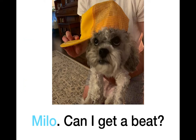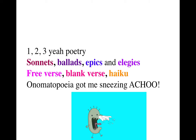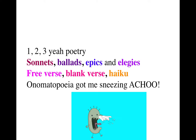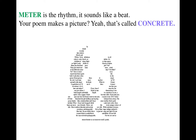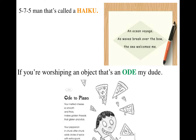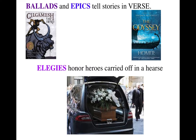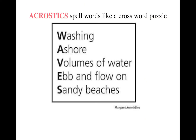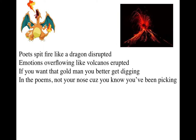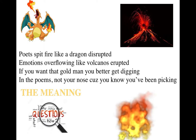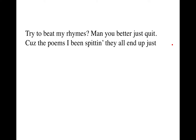Hey Milo, can I get a beat? I said one, two, three, yeah — poetry! We're talking sonnets, ballads, ethics, and elegies. We're talking free verse, blank verse, haiku. Onomatopoeia got me sneezing. Some poems you see, they just got to rhyme. And some are just free, man — it ain't no crime. Limericks and sonnets, yeah, they out here scheming. Precision in their meter and their rhyme is beaming. Meter is the rhythm, it sounds like a beat. Your poem makes a picture? Yeah, that's called concrete. Five, seven, five, man — that's a haiku. If you worship an object, that's an ode, my dude. Ballads and epics tell stories in verse. Elegies honor heroes carried off in a hearse. I cross expel words like a crossword puzzle — oh, you don't dig poems? Well, here's my rebuttal. Poets spit fire like a dragon disrupted. Emotions overflowing like volcanoes erupted. If you want that gold, man, you better get digging in the poems — not your nose, because you know you've been picking. Try to beat my rhymes, man, you better just quit, because the poems I be spitting, man, they all end up just lit.